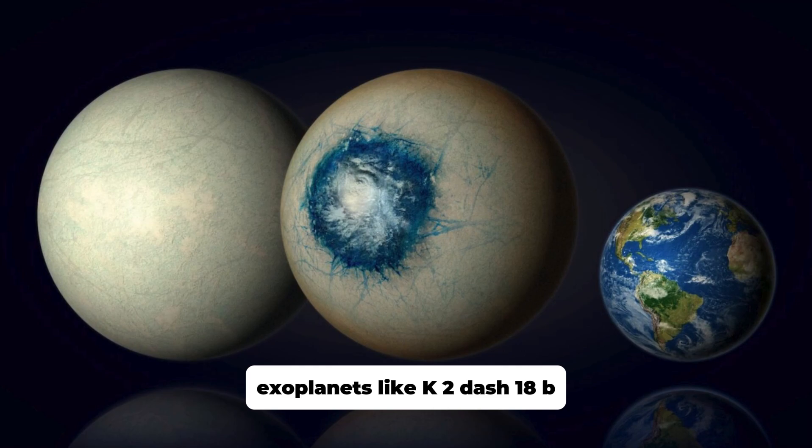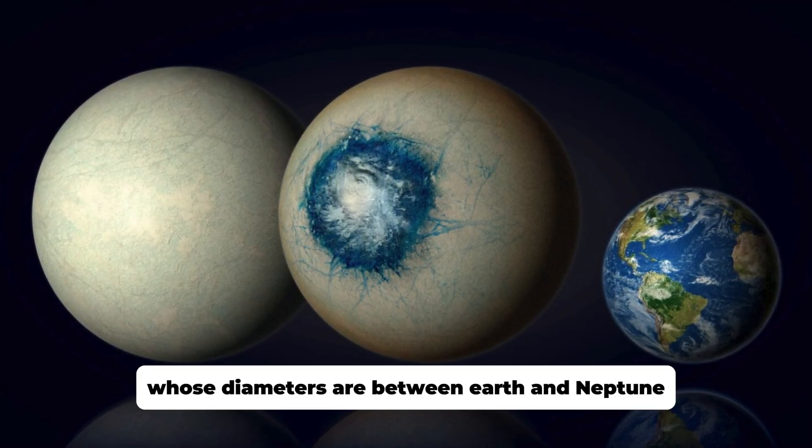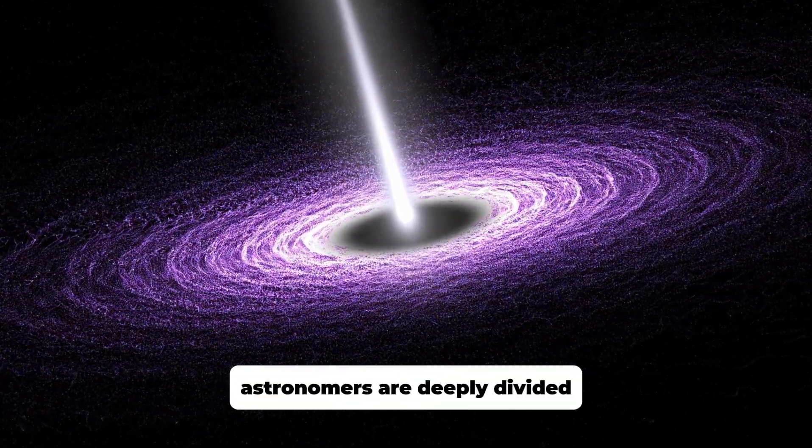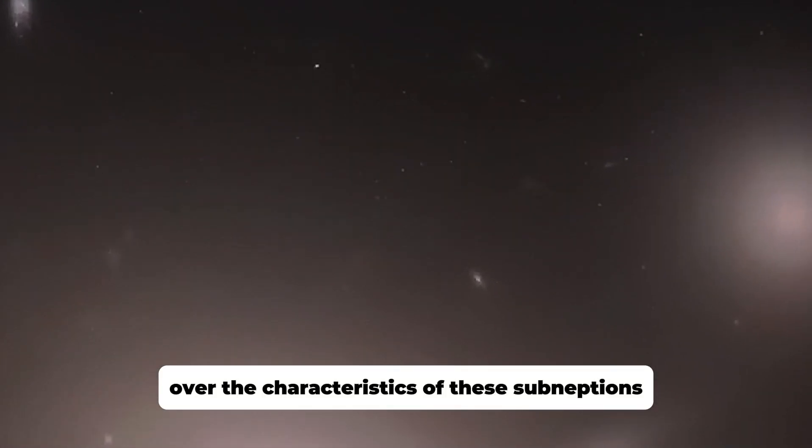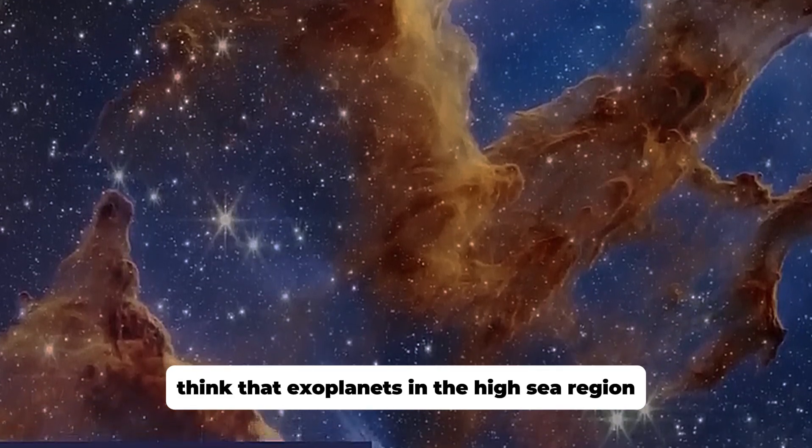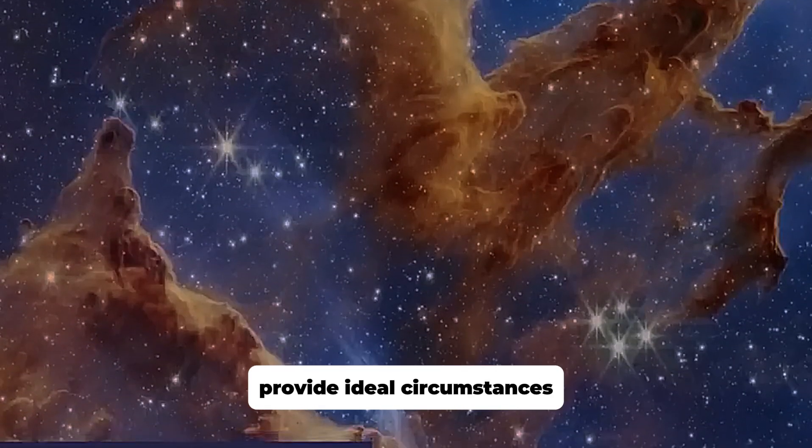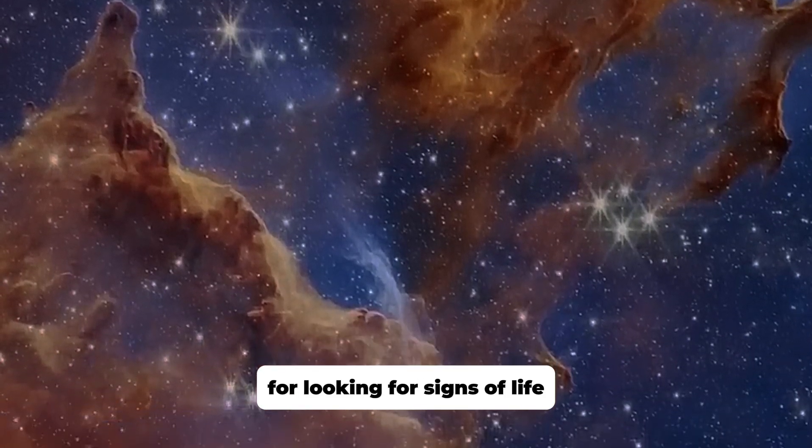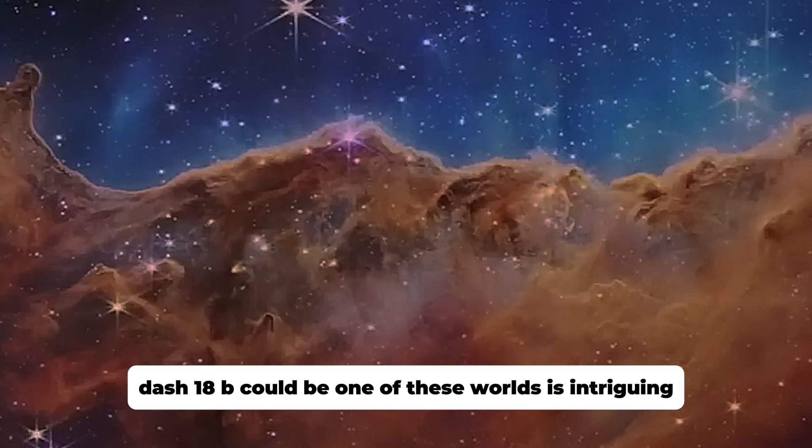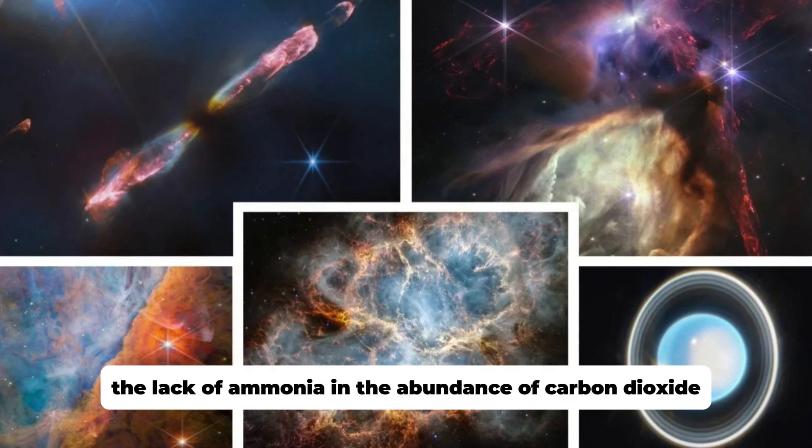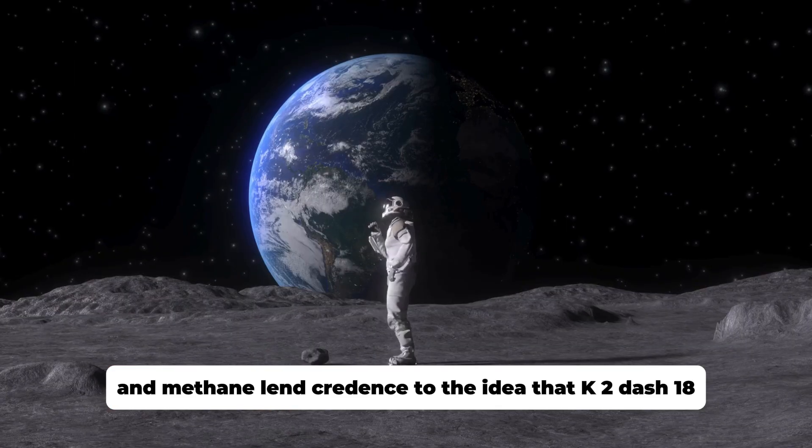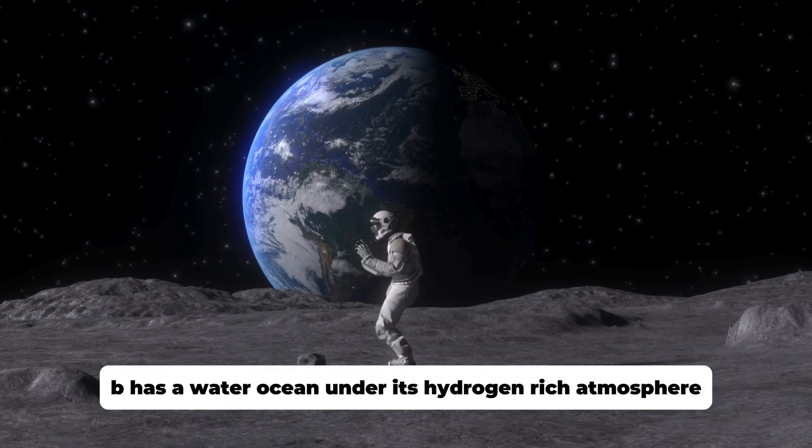Exoplanets like K2-18b, whose diameters are between Earth and Neptune, are unique in our solar system. Astronomers are deeply divided over the characteristics of these sub-Neptunes because of how little is known about them and their atmospheres. Some scientists think that exoplanets in the Hycean region provide ideal circumstances for looking for signs of life. Therefore, the idea that K2-18b could be one of these worlds is intriguing. The lack of ammonia and the abundance of carbon dioxide and methane lend credence to the idea that K2-18b has a water ocean under its hydrogen-rich atmosphere.